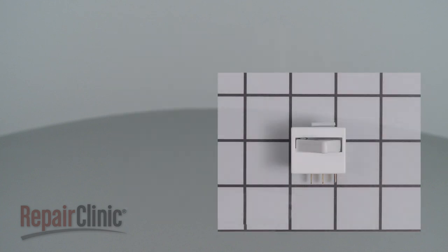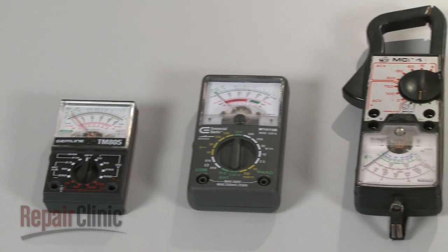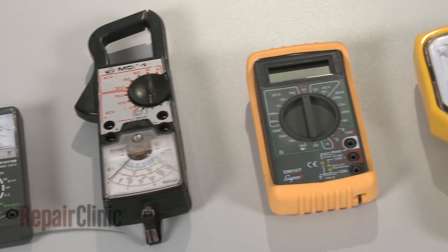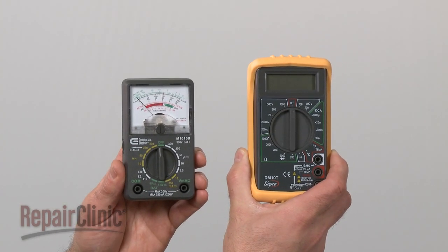Switches come in many shapes and sizes, but all of them can be tested for continuity. You can choose from a variety of multimeters to perform the test. For this demonstration, we will use both analog and digital models.